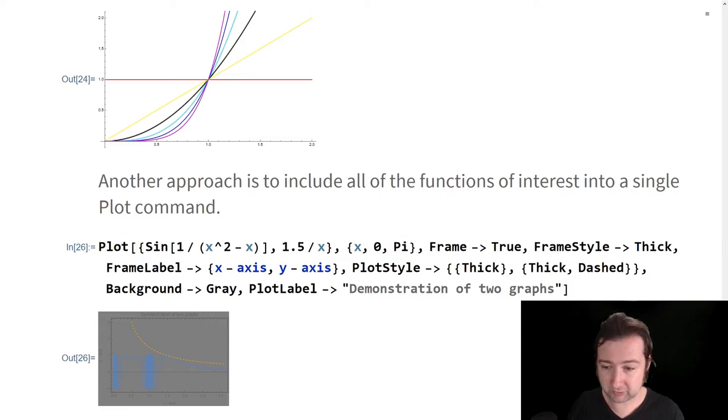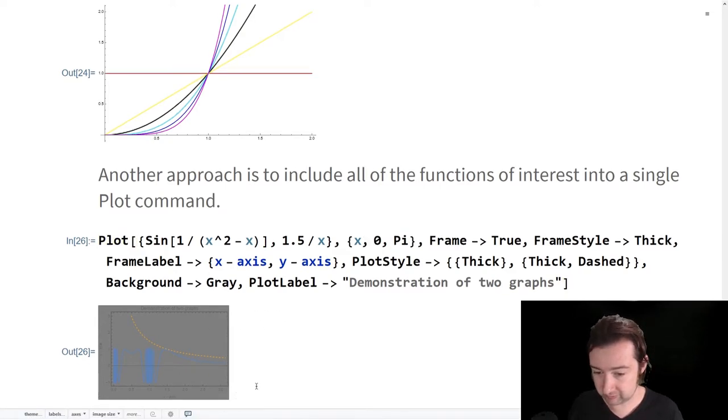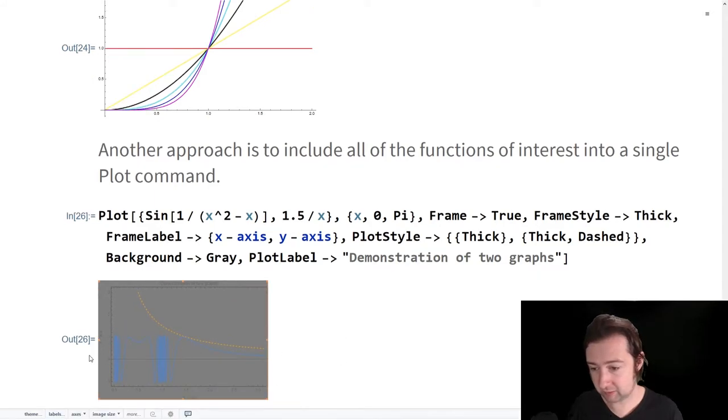There's various options that have been added on here, we've got a frame around the plots, we have frame labels. If we zoom in on this a little bit, you can see that over here, you have the x axis and the y axis. This is an idea of the sorts of options that you have available when you're working with plot.